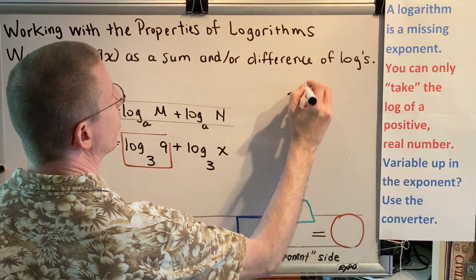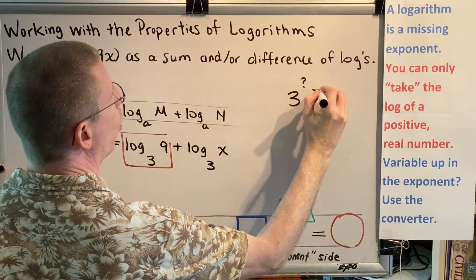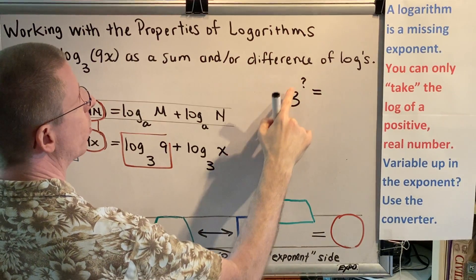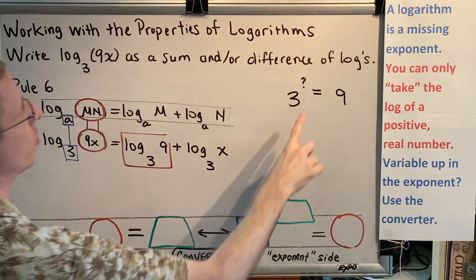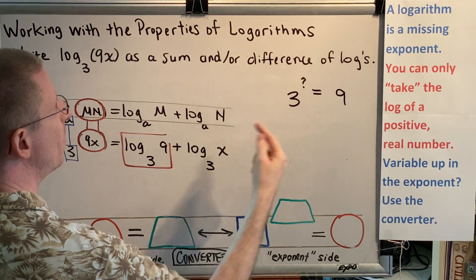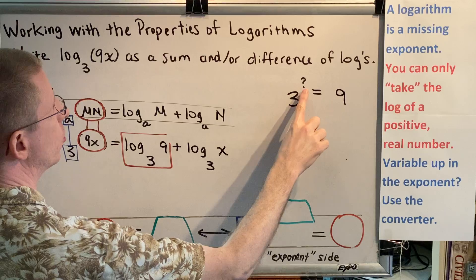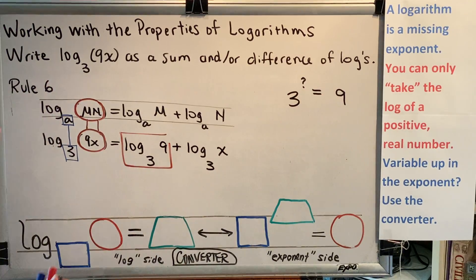Sometimes it's a little easier to see it if you write it down. What is the exponent that goes on 3 to make 9? The answer to that question is 2. 3 times itself 2 times, so 2 is the missing exponent, will give you 9.